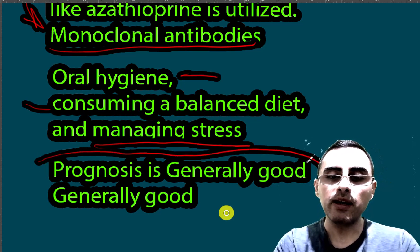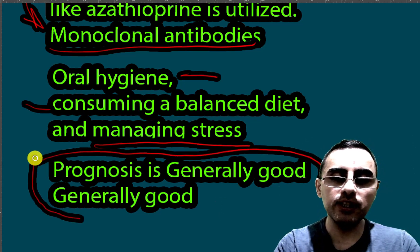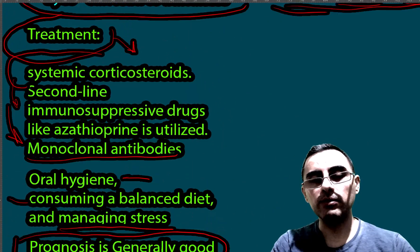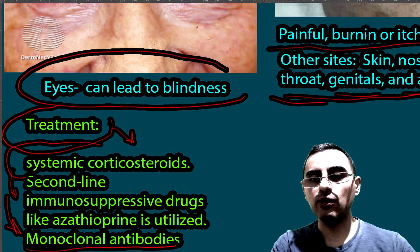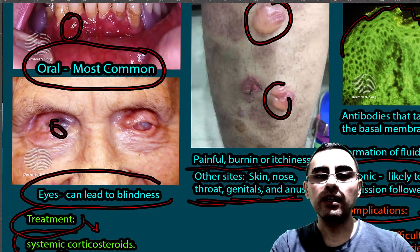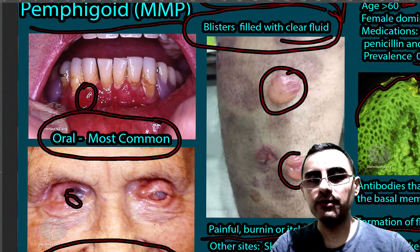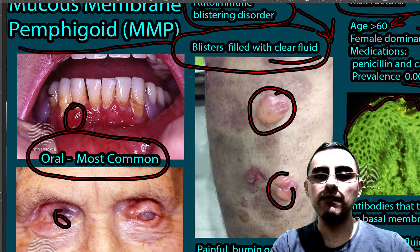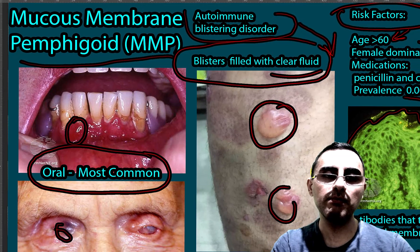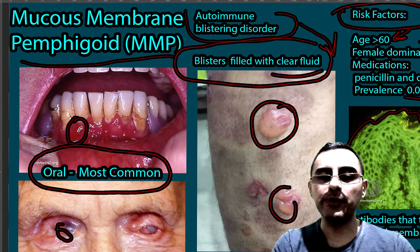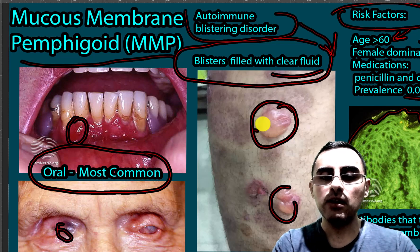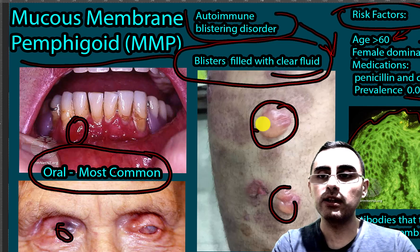Regarding prognosis, if treated effectively the prognosis is generally good, but if left untreated the prognosis can be bad because it can cause serious complications such as blindness. To summarize, mucous membrane pemphigoid is a rare disease and it causes blisters filled with clear fluid.